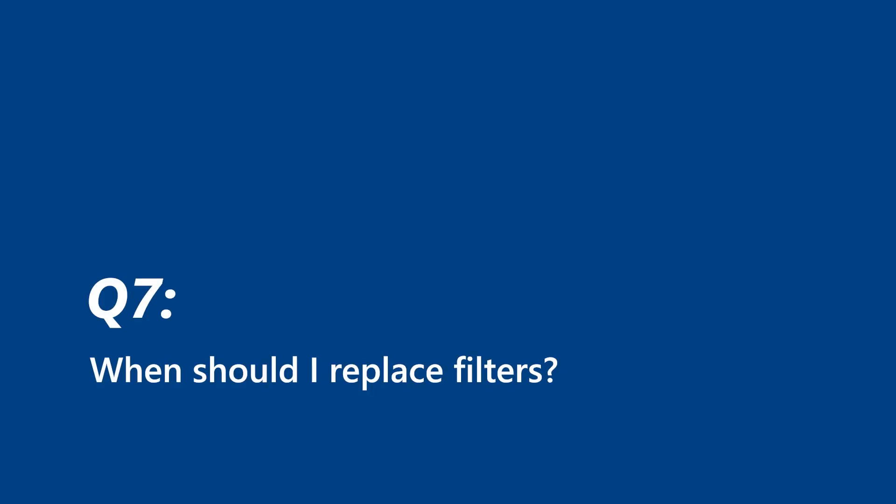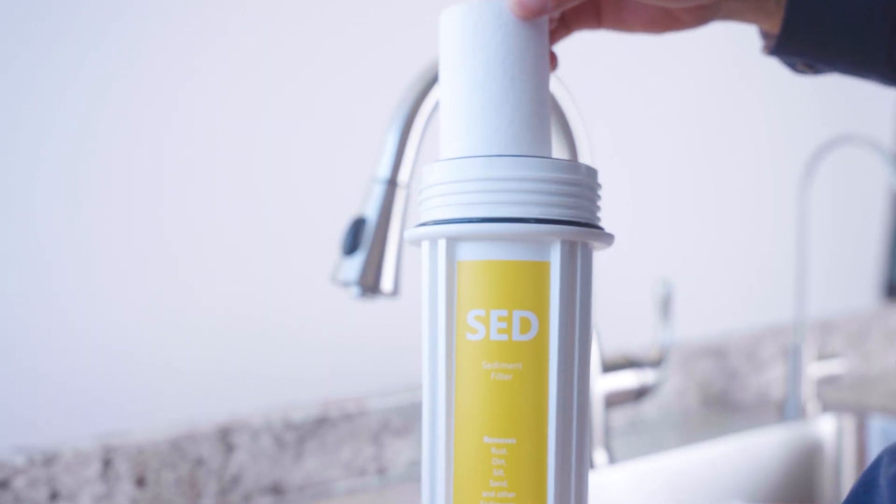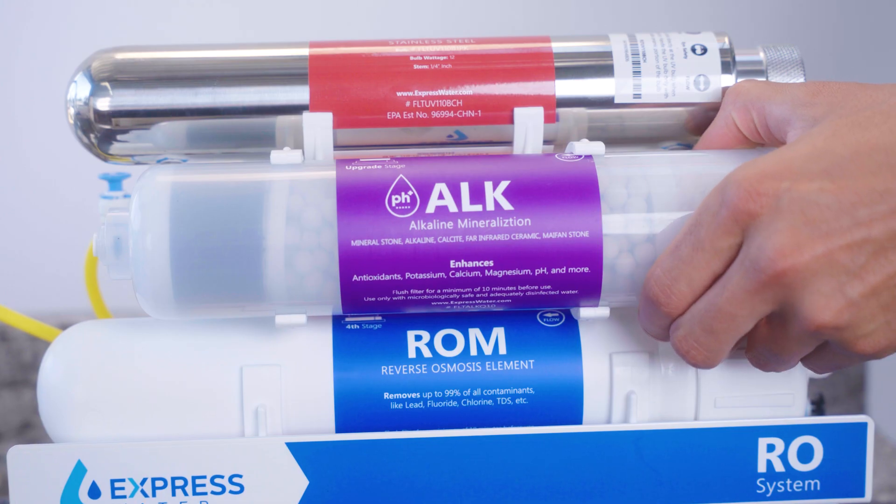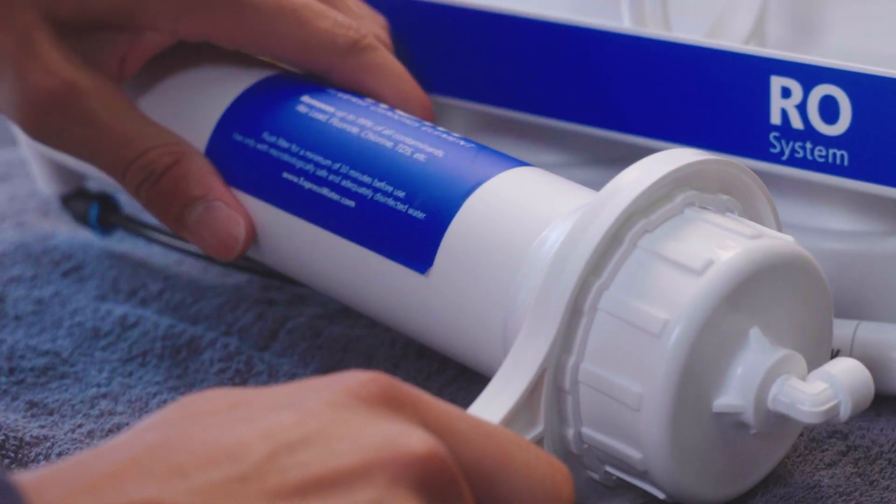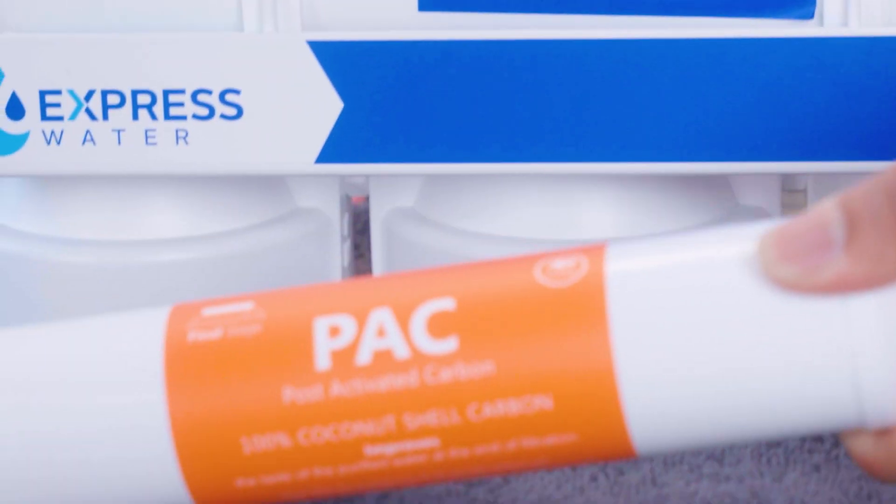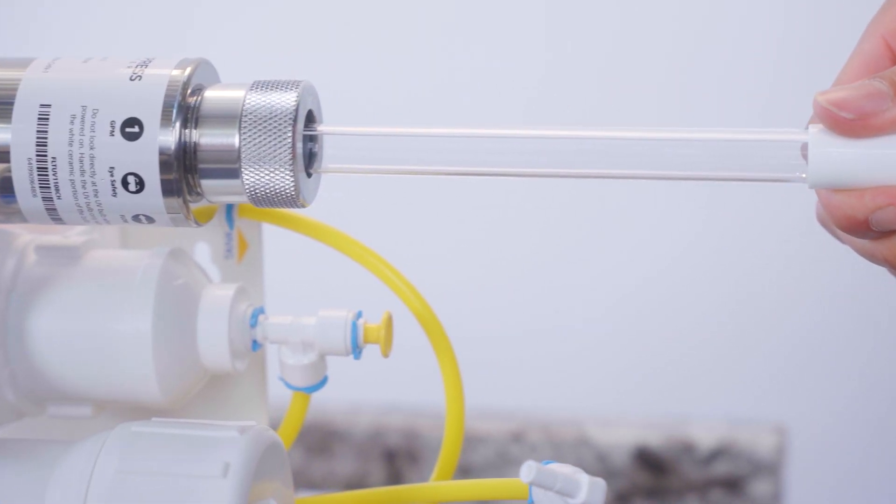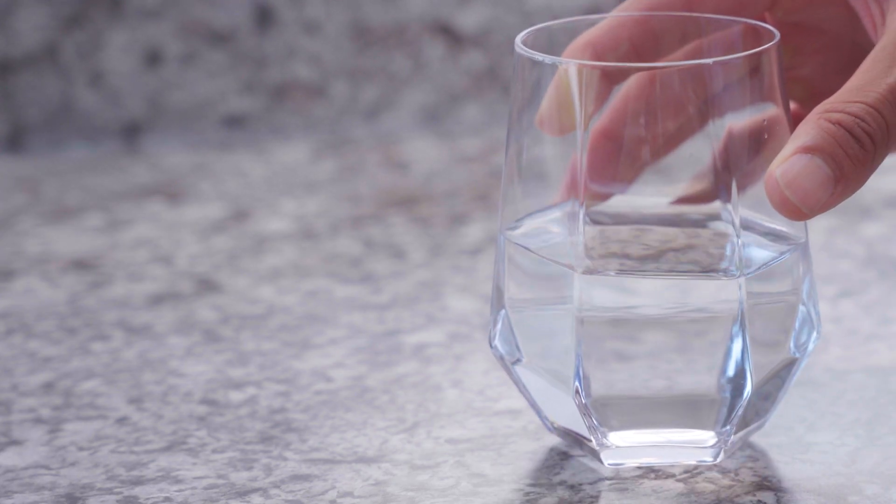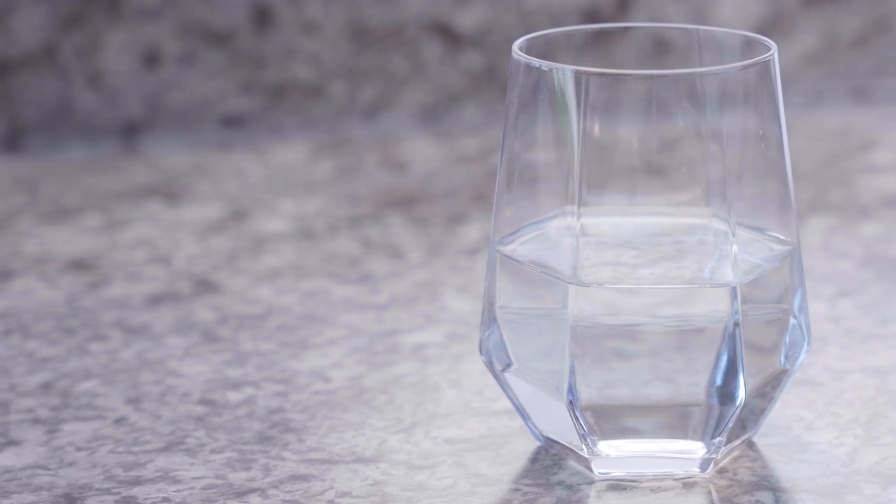Here's a simple schedule: every six months, replace the sediment, GAC, ACB, alkaline, and DI filters. Every 12 months, replace the RO membrane and inline carbon filter. And lastly, every 6 to 12 months, replace the UV bulb. Even if your water tastes okay, the filters wear down over time and won't block contaminants as well.